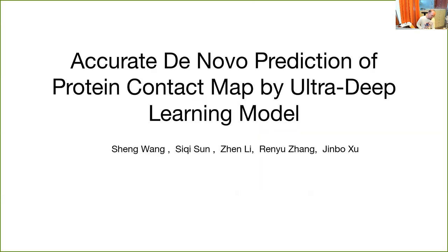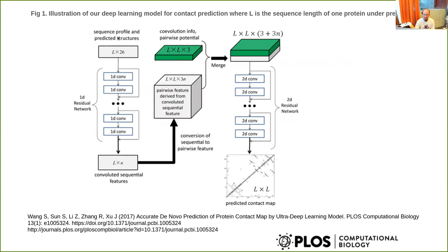Then there was a revolution when people started using deep learning — and the key paper is by Ji Xu et al., on accurate prediction of protein contact maps by deep learning models. The idea is very similar to what we did, but with much deeper machine learning models. The idea is to take your sequence profile and secondary structure predictions, put them through convolutional networks, converting to an L-by-N representation where L is the length of the sequence and N is some depth. You also include co-evolution information — the plmDCA or PSICOV scores — which is L-by-L.